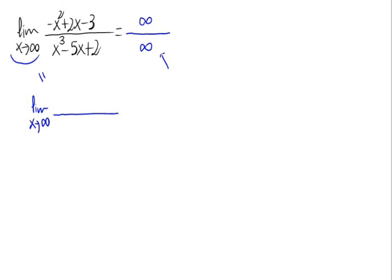To solve this indetermination, we have to divide the numerator and the denominator by the x with the biggest exponent in the whole fraction. We can see that the biggest exponent is x cubed, so let's divide everything — numerator and denominator — by x cubed.